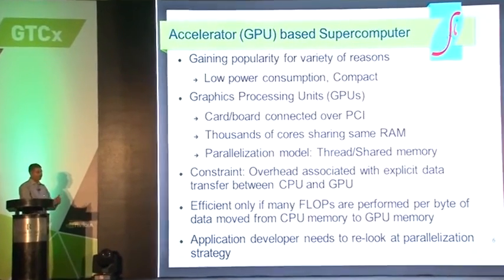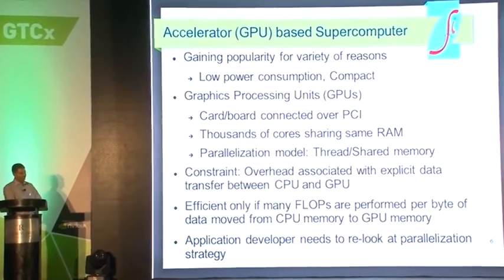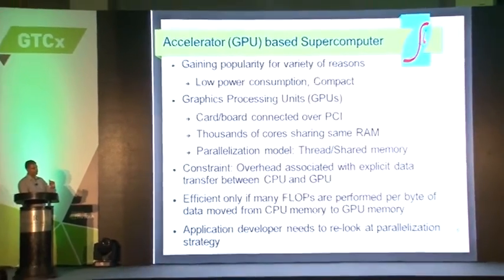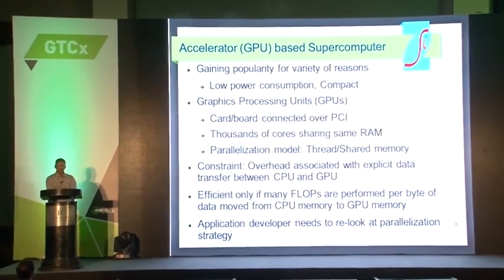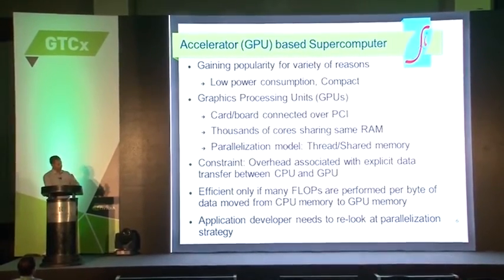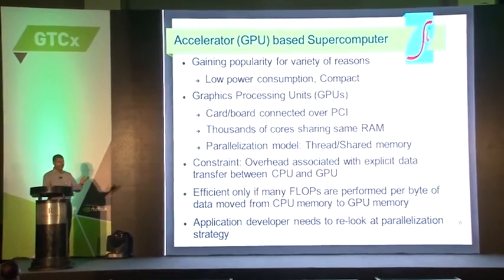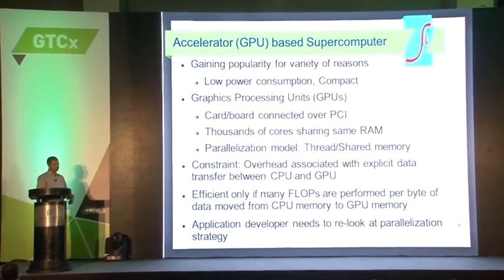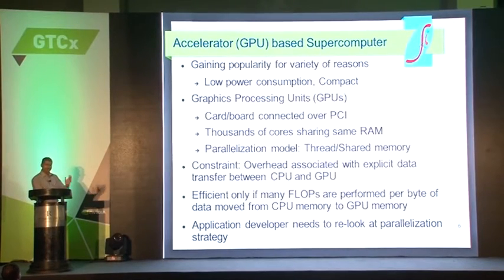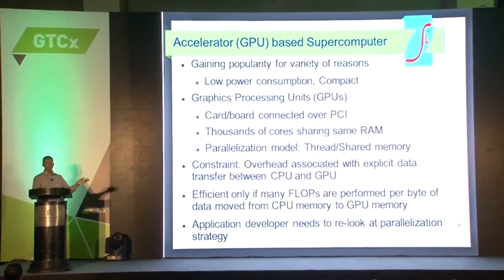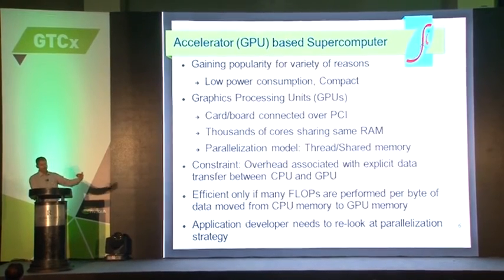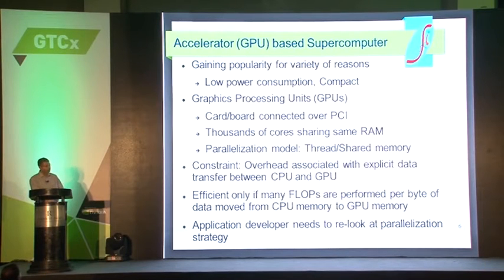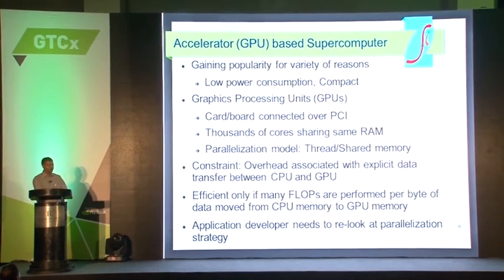One of the constraints of accelerator-based supercomputers, especially with GPUs, is the overhead associated with explicit data transfer between CPU and GPU. GPU is efficient typically only if many floating-point operations are done per byte of the data that is brought into the GPU memory. What this means is we cannot use our traditional distributed memory parallel concepts for parallelizing CFD code on GPUs. The application developer needs to re-examine the parallelization strategy, especially from the point of view of the underlying architecture.